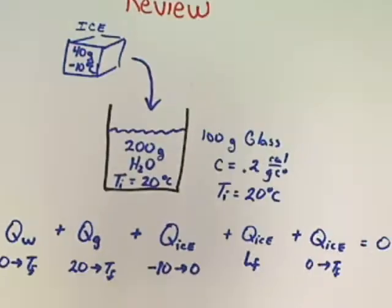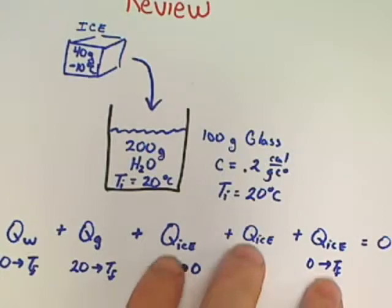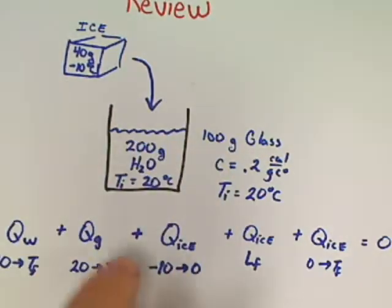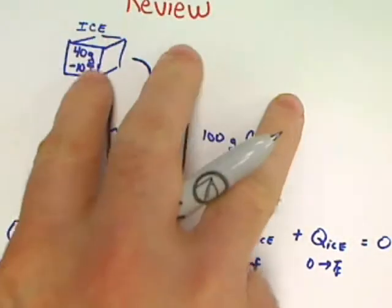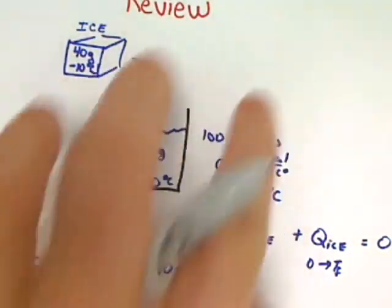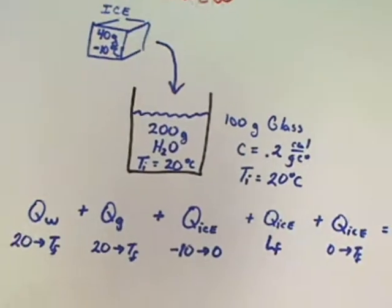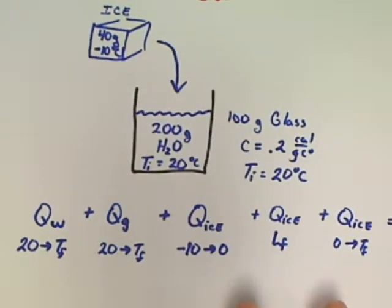So here's my entire problem: five Q's. You can keep it in your head — if the ice is at negative 10, you will have three Q's for the ice when finding temperature final. Let's go straight in and start plugging in numbers.